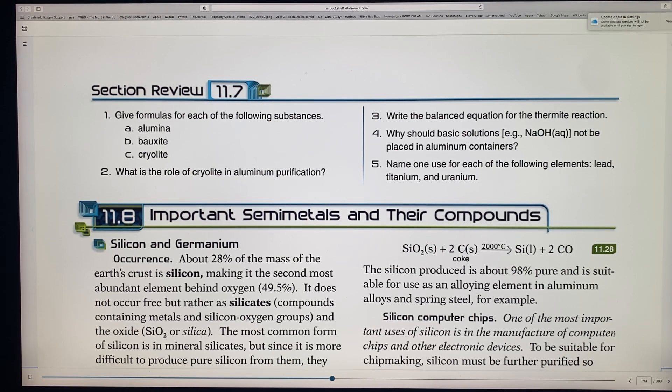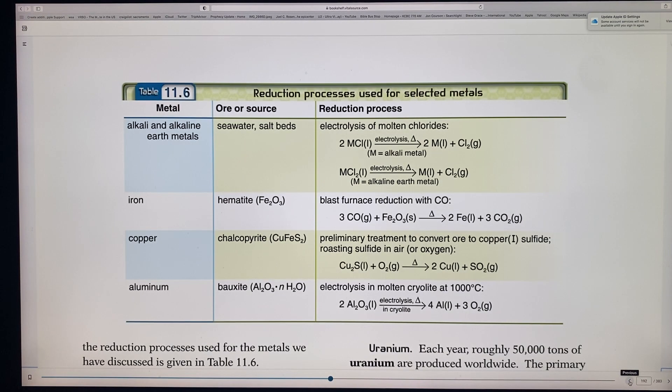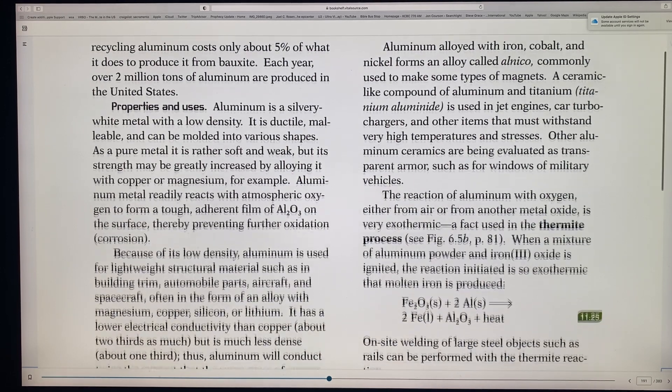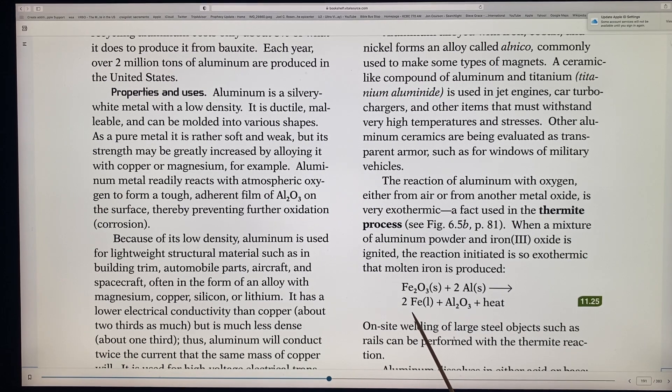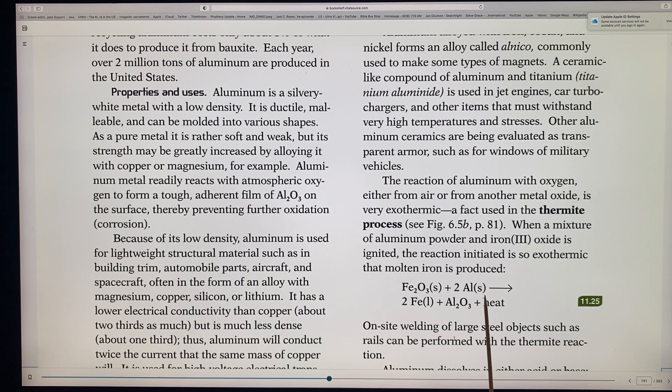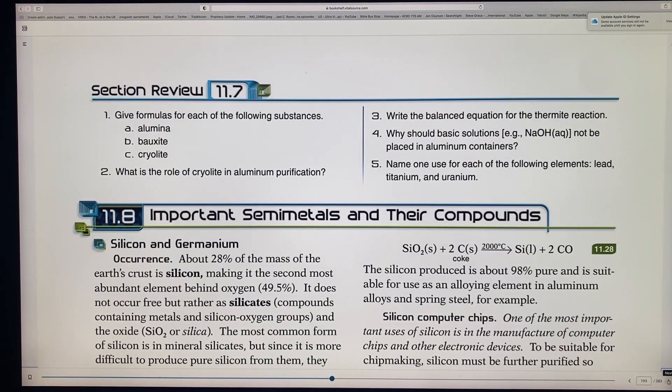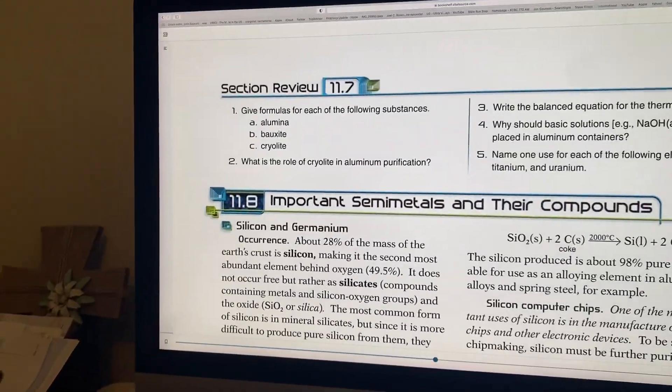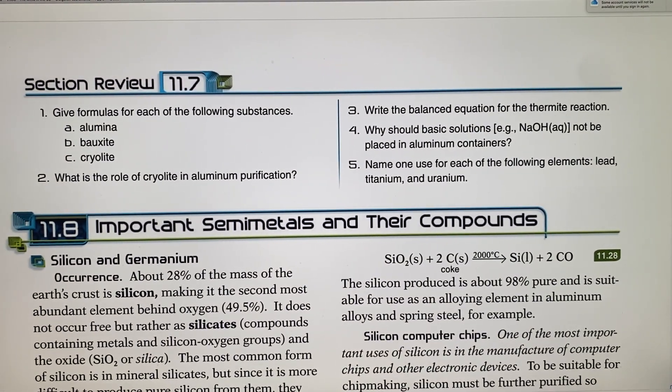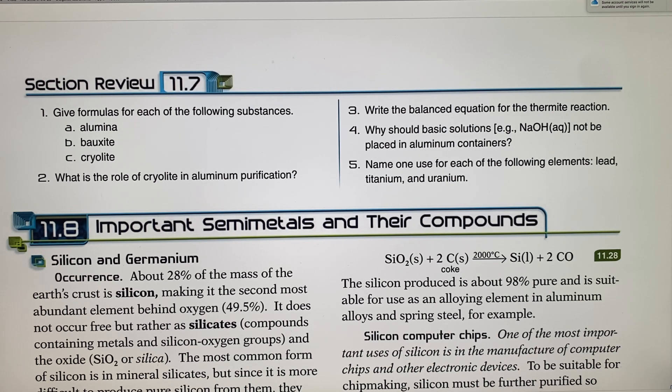So let's go back to our questions. Write the balanced equation for the thermite reaction. I already went over that one. So you have basically, let's look at it real quick so you can see it. Right here. This one here at the bottom with iron, ferrous oxide with aluminum. And then the oxygen and the aluminum, the oxygen combines the aluminum and it produces a lot of heat. Just say that. Why should basic solutions like NaOH not be placed in aluminum containers? Because aluminum dissolves in acids or bases. And so it will corrode in the midst of it actually causes a big reaction. So you never use aluminum with acids and bases.